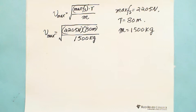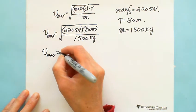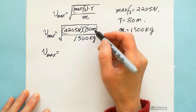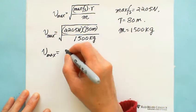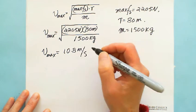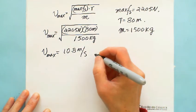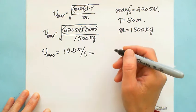So after calculation, we got maximum speed, because from this one, newton, meter and kilogram, the speed is meter per second. We got 10.8 m/s, and we convert to kilometer per hour.